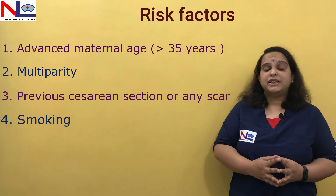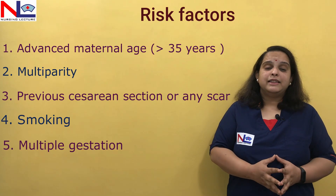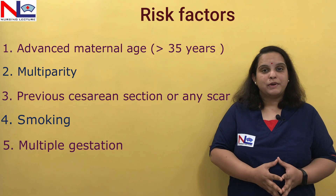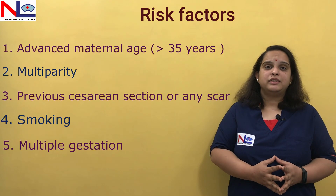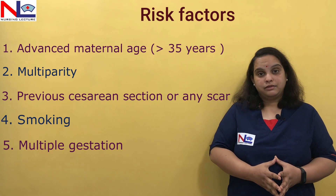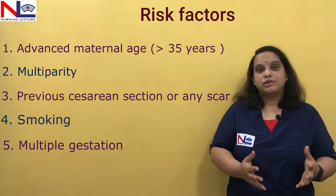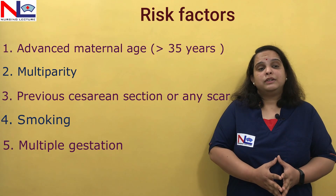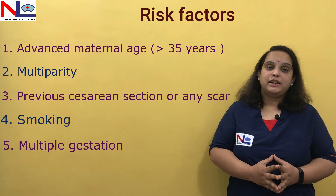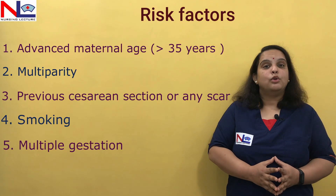If the mother has multiple gestation such as a twin pregnancy, there may be one large placenta or two placentas. In either condition, the placenta gets implanted up to the lower segment because there is a larger surface area of placenta needed to supply more fetuses. These are the risk factors where the placenta implants in or encroaches up to the lower segment.